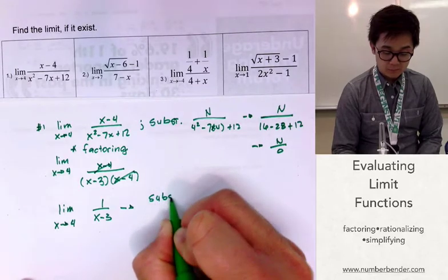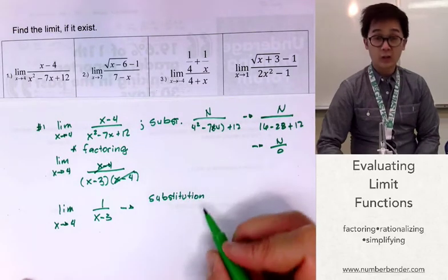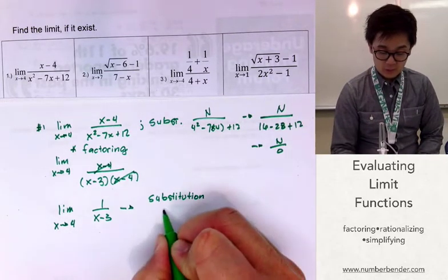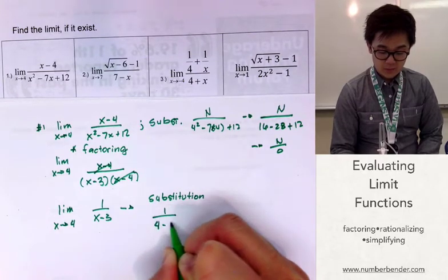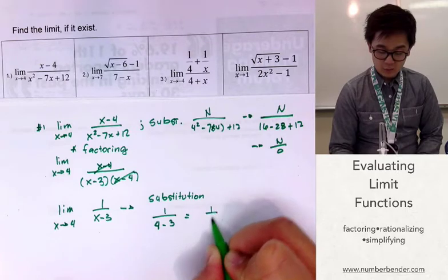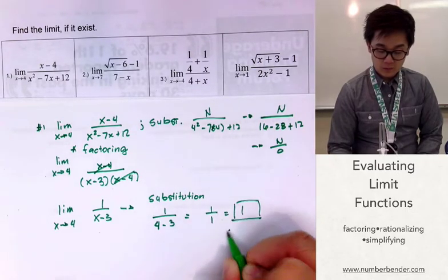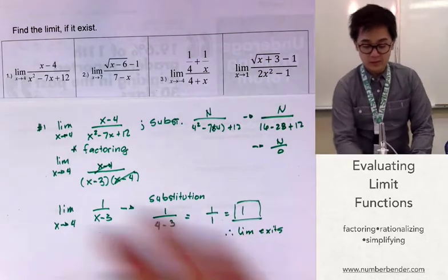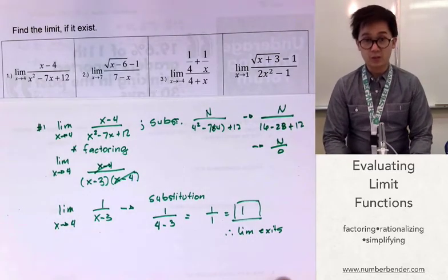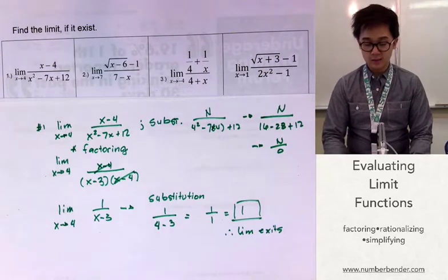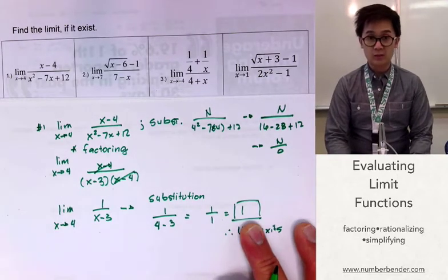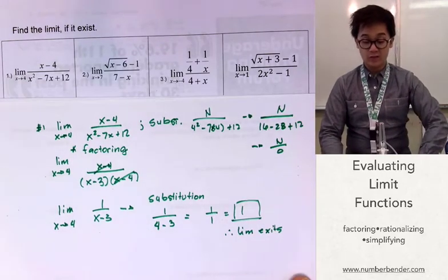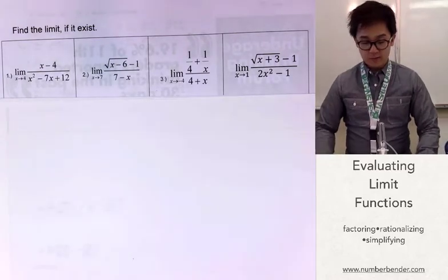We can now cancel the x minus 4 terms, leaving us with 1 over x minus 3. By substitution, we evaluate at x approaches 4: we have 1 over 4 minus 3, which gives us 1 over 1, which equals 1. So the limit exists. The function as x approaches 4 will be at y equal to 1.